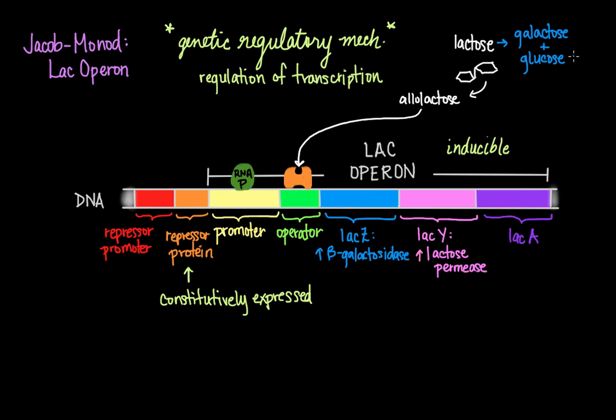What happens if both glucose and lactose are present? In that case, the transport of glucose actually blocks the transport of the inducer of the LAC operon — the lactose — in a process called inducer exclusion. The transport of glucose into the cell leads to the formation of a protein intermediate that binds to the lactose permease and prevents it from bringing in more lactose. Decreased lactose leads to decreased allolactose, so the repressor re-binds the operator and prevents transcription of the LAC operon genes.